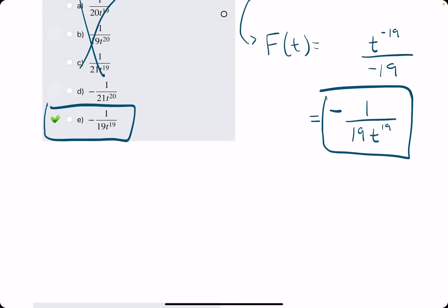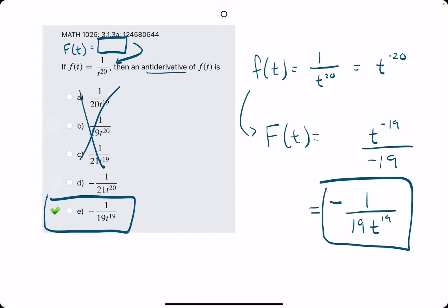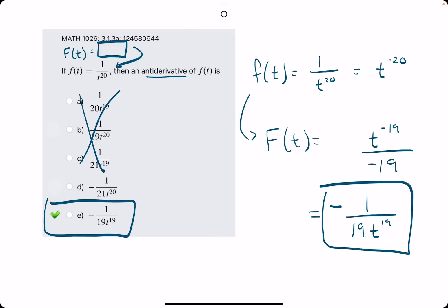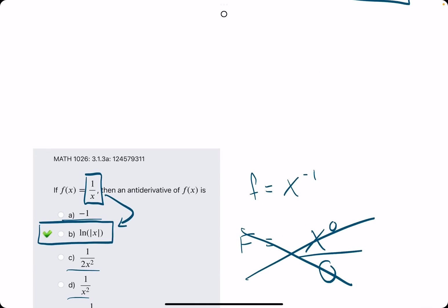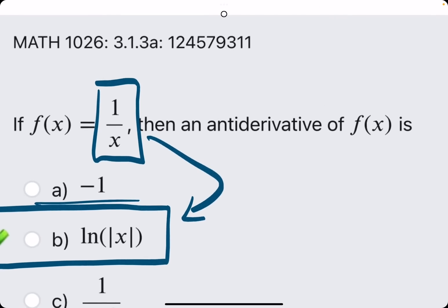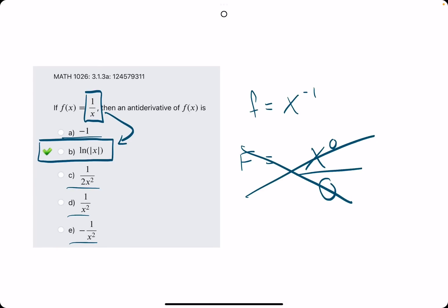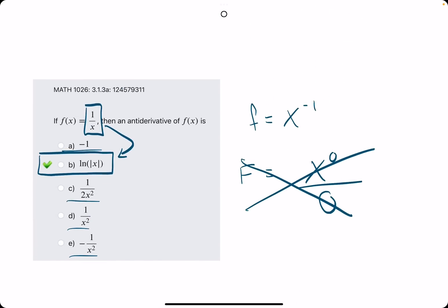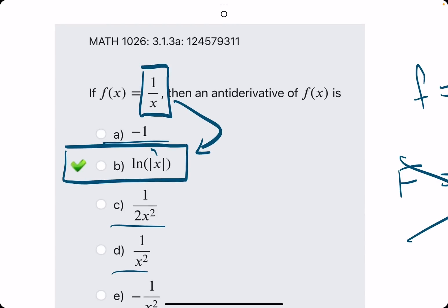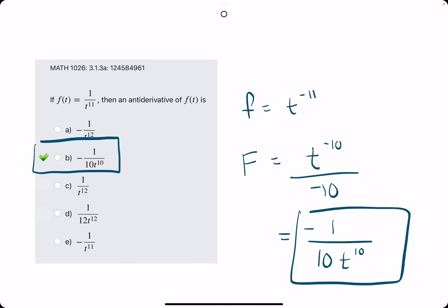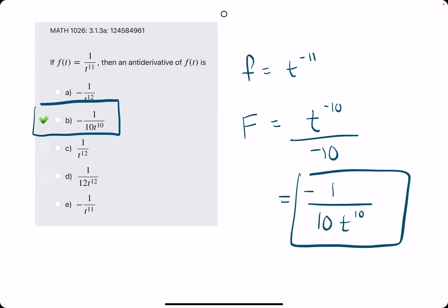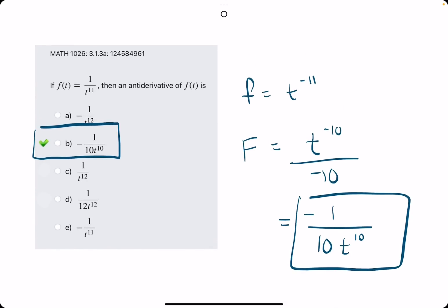So, again, rewrite the function as the variable raised to some exponent, likely with the help of negative exponents, unless it's 1 over x. 1 over x goes to natural log of x. Again, because the derivative of ln of x is 1 over x. And so, this was a good little intro in anti-derivatives using the reverse power rule. If you have any questions, let me know.